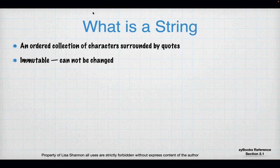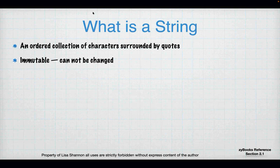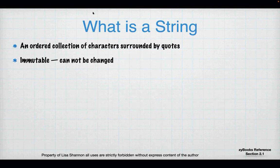It's important to understand that strings are immutable. What do I mean by immutable? Strings can't be changed. There are functions you can use on a string to create a new string that's modified how you want it to be, but you can't actually change a string. That's what immutable means — it cannot be changed. But it doesn't mean you can't create a new one from it with the change in it.